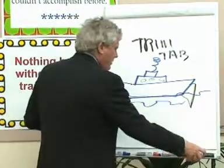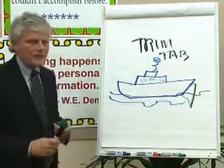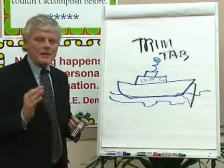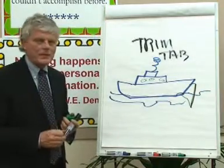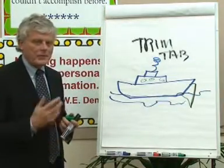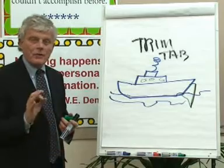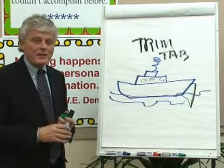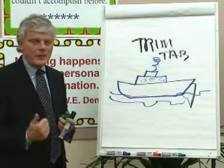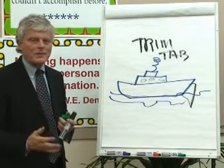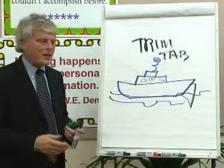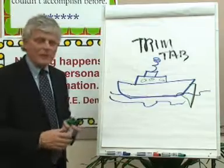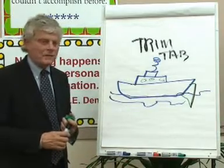So what Bucky called himself — and he's probably the greatest mind of the 20th century — he called himself a trim tab. He made 50 predictions, of which 47 came true: the photoelectric cell, a person on the moon. He made them 50 years in advance, and 47 out of 50 came true.